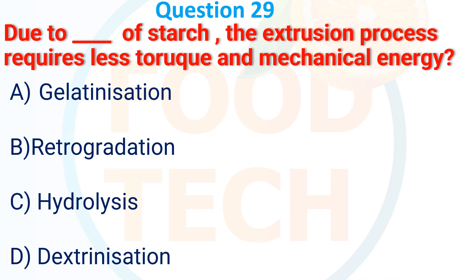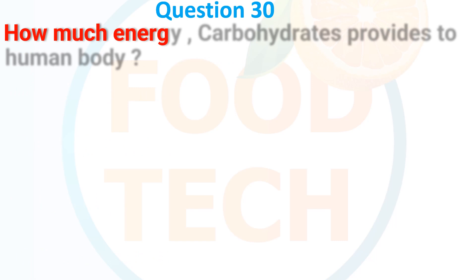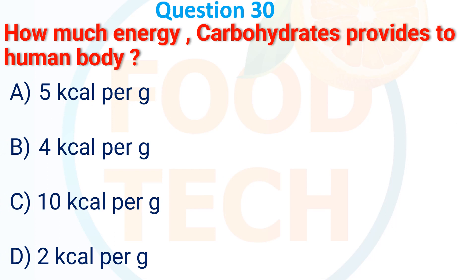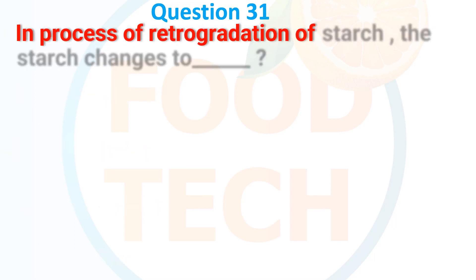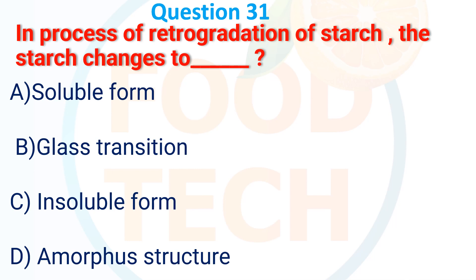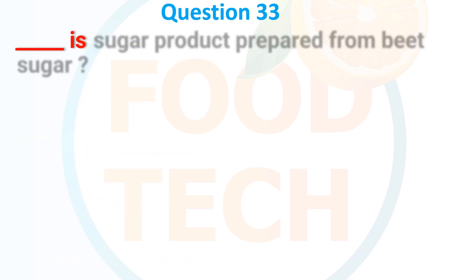Question 27: Due to starch destruction process, less torque and mechanical energy — A. Gelatinization, B. Retrogradation, C. Hydrolysis, D. Dextrinization. The answer is A. Gelatinization. Question 28: How much energy does carbohydrate provide to the human body? A. 5 kcal, B. 4 kcal, C. 10 kcal, D. 2 kcal. The answer is B. 4 kilocalories. In the process of retrogradation of starch, the starch changes to — A. Soluble form, B. Glass transition, C. Insoluble form, D. Hemispherical structure. The answer is B. Glass transition.